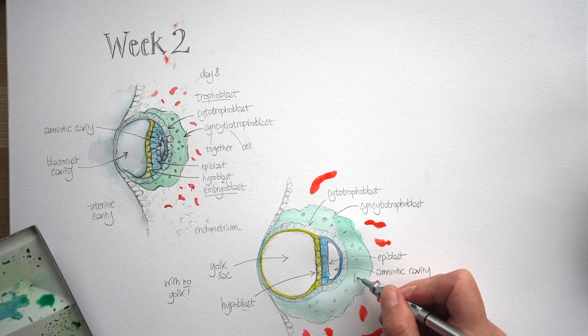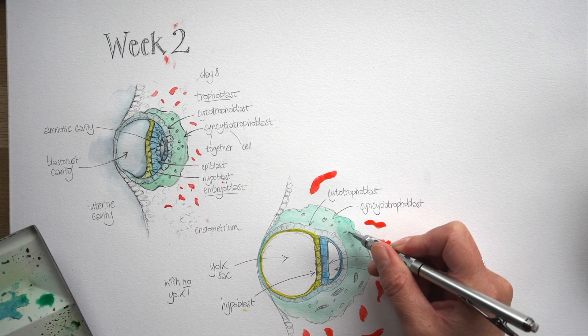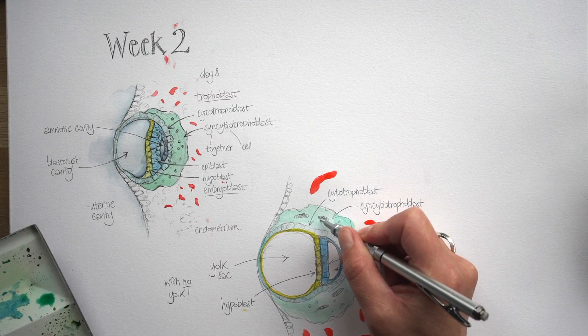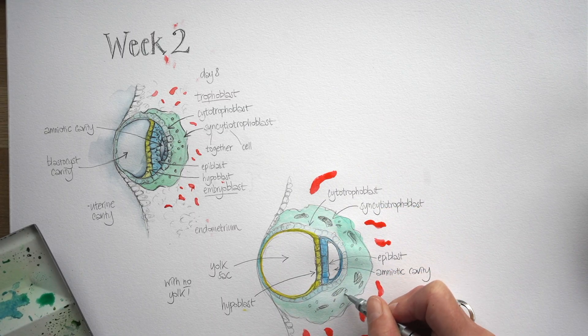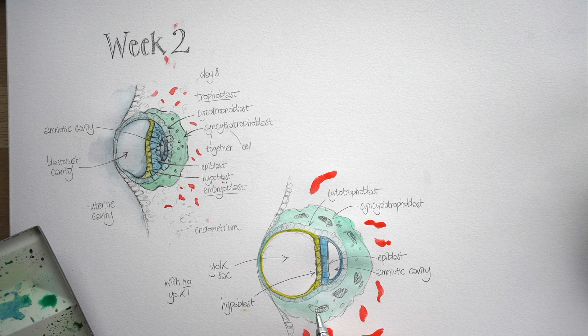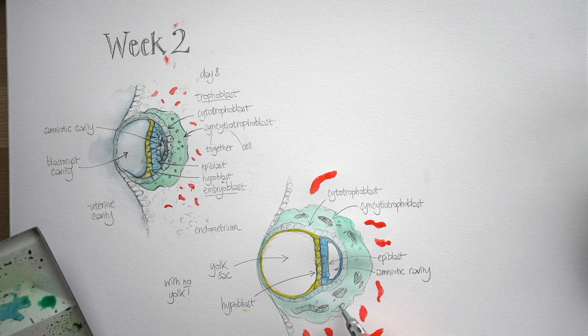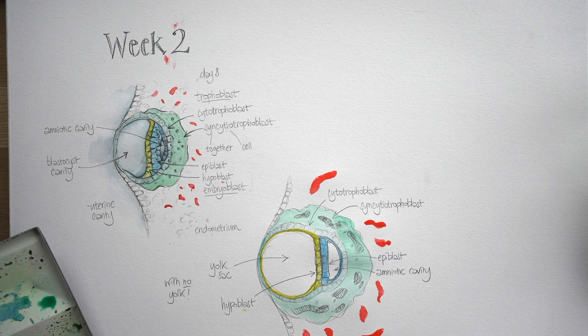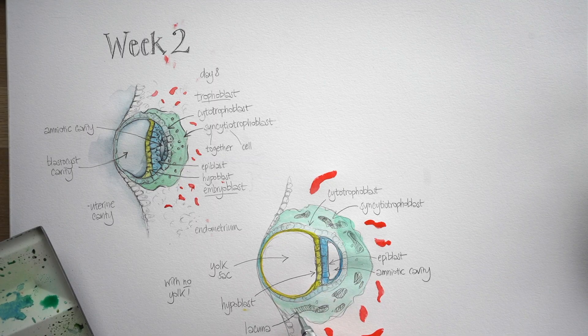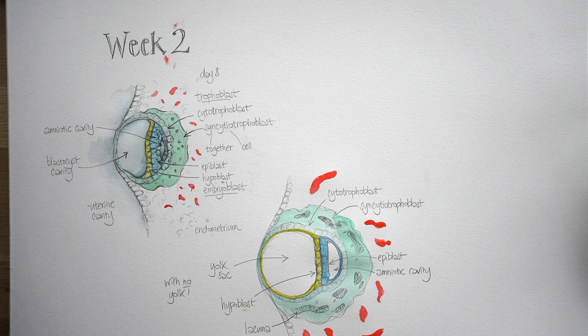You can see the blood vessels here growing much larger in the endometrium. And you can see gaps opening up in the syncytiotrophoblast. So these gaps are eventually going to coalesce to form little lakes or lacunae within the syncytiotrophoblast. So there's one of them, a lacuna.